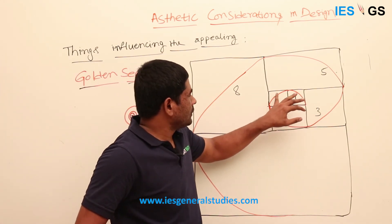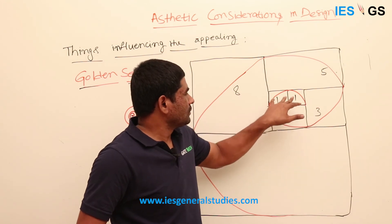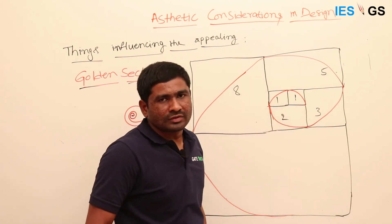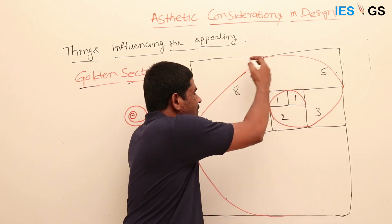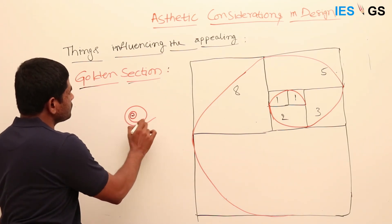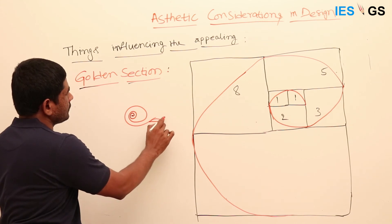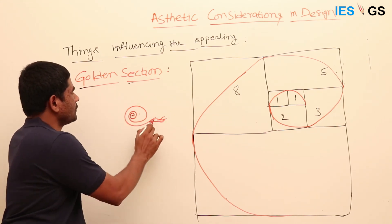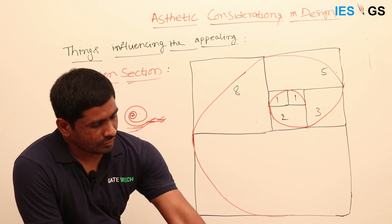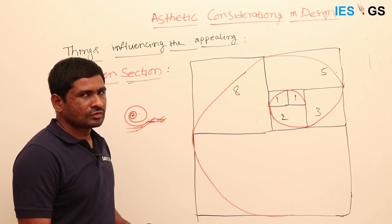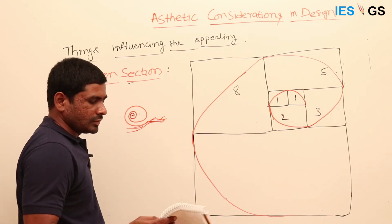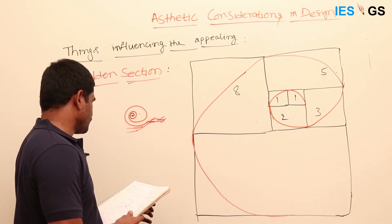Nature is trying to follow this pattern, which gives a very aesthetic effect. Even in paintings, many artists use the golden section. If you observe, so many artists use this golden section.